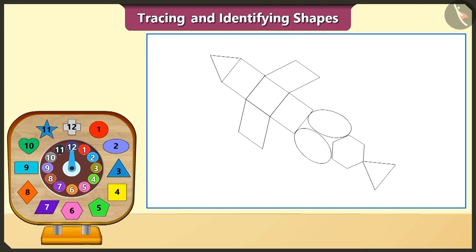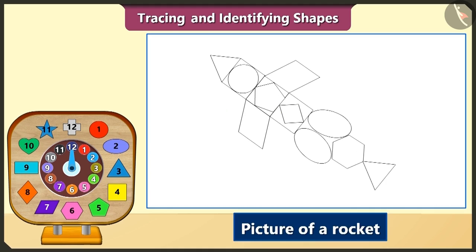Now look at these blocks. This is a circle, this is a pentagon and this is a rhombus. Now we will place these blocks in the three traced square shapes and trace them. Oh wow, this is a picture of a rocket.